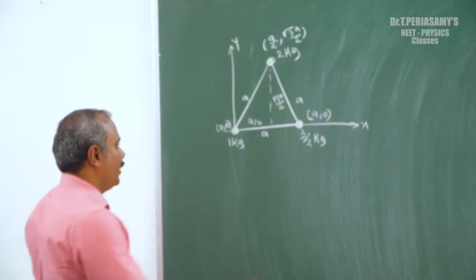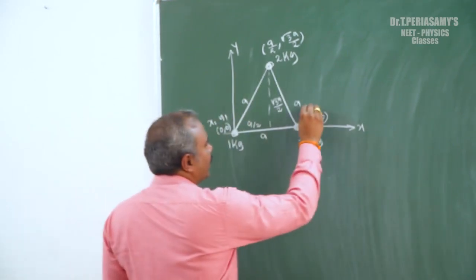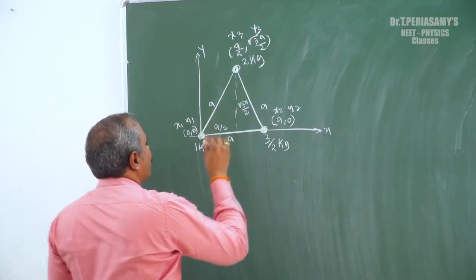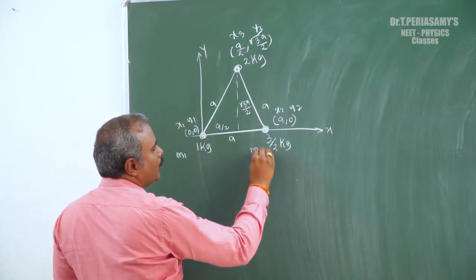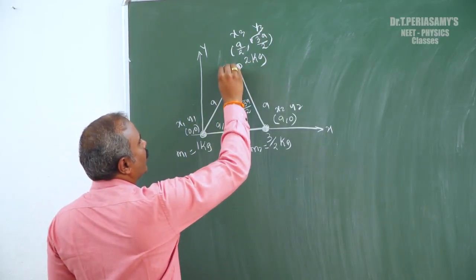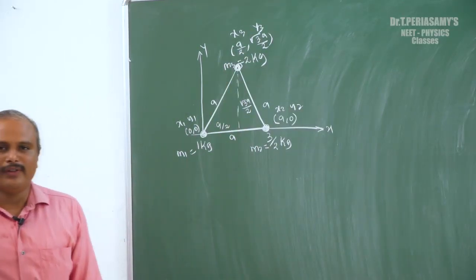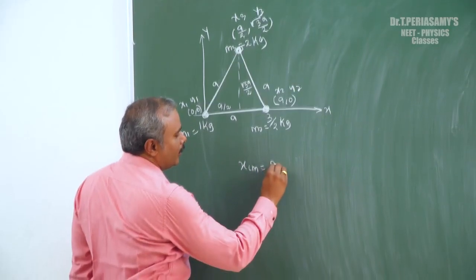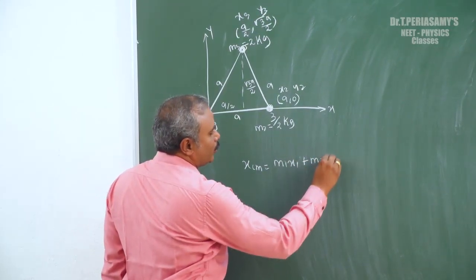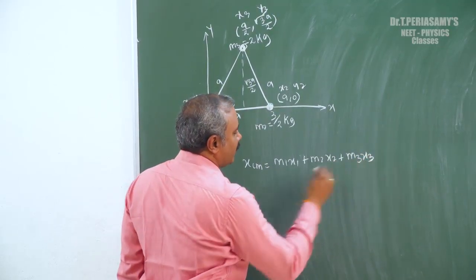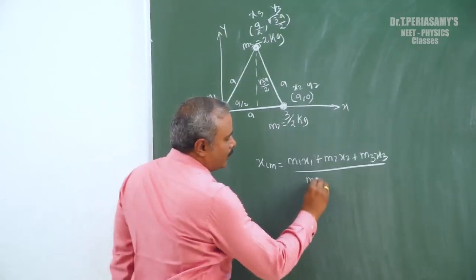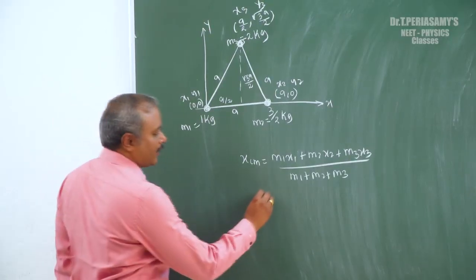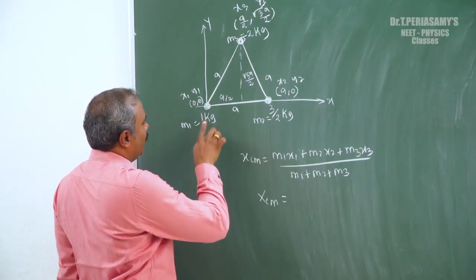Now we define the coordinates: x1, y1 for mass m1; x2, y2 for mass m2; x3, y3 for mass m3. The center of mass formula is: x_cm = (m1·x1 + m2·x2 + m3·x3) / (m1 + m2 + m3). So x1 is 0, x2 is a, and x3 is a/2.